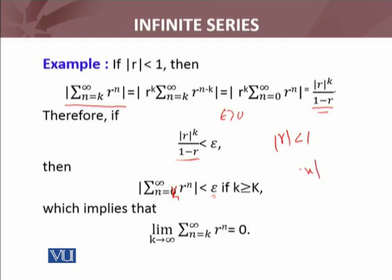Now, for any real number, if x is less than epsilon for all epsilon, it means x equals zero. Applying this result here, which implies that limit k approaches to infinity, summation n equals k to infinity r^n equals zero.